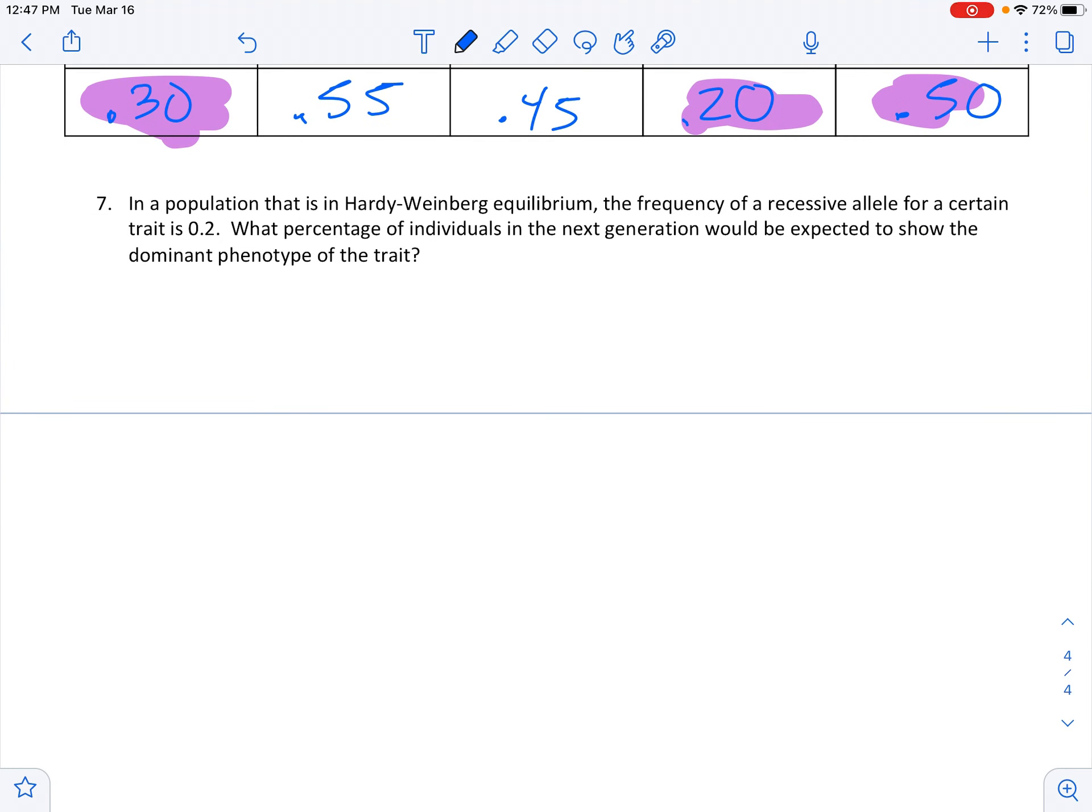Question 7. In a population that is in Hardy-Weinberg equilibrium, that's described on page 298-299 in the textbook, the frequency of recessive allele for a certain trait is 0.2.